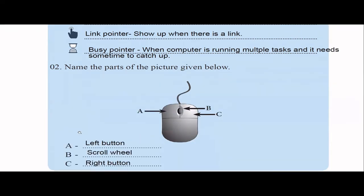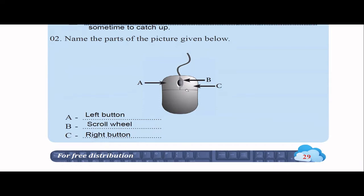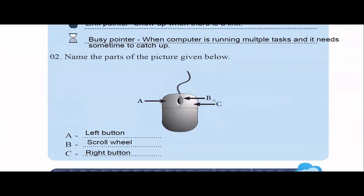They're asking you to name parts of the mouse. A is the left button, B is the scroll wheel which you can scroll with, and C is the right button. With the left button you can do normal clicks, drag things, and select things. With the right button you can do a right-click.